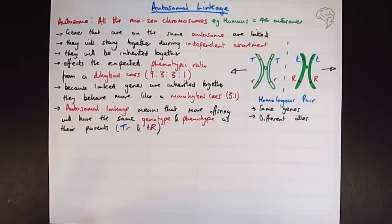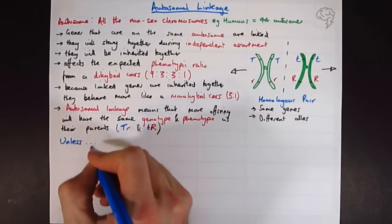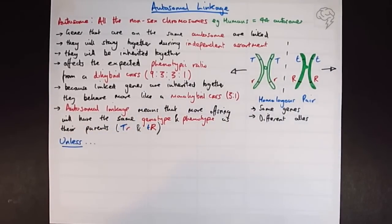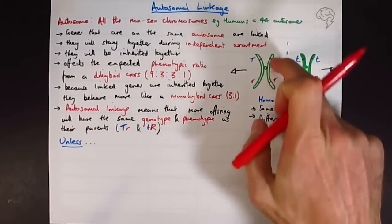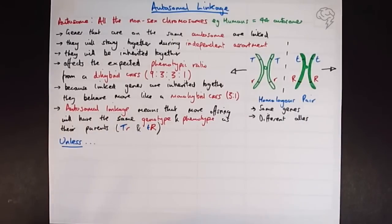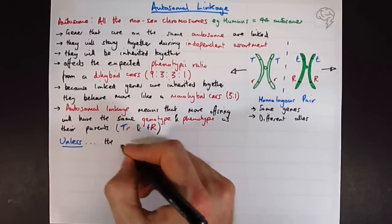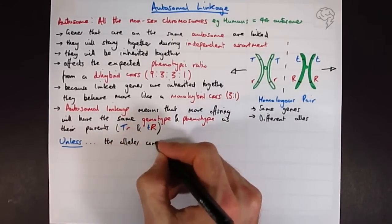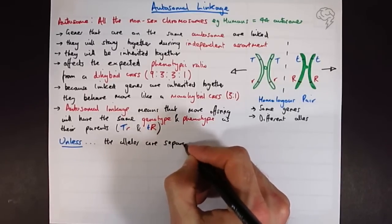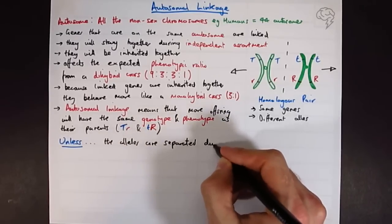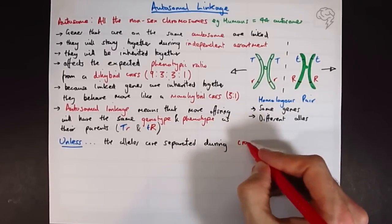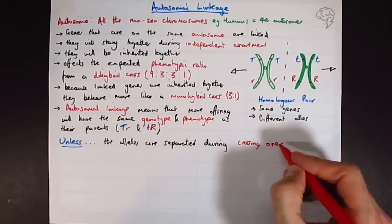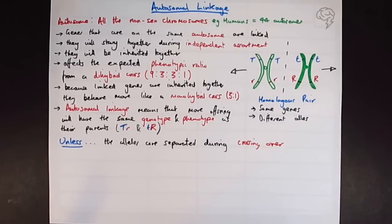And there's one exception to this. So I'm going to put unless. This is unless they are separated. These genes or alleles are separated during crossing over. So crossing over the other element of meiosis, which contributes to genetic variation between the each generation. So I'm going to draw that as a diagram here. So I'm going to draw my two pairs lined up that are going to be doing their crossing over.